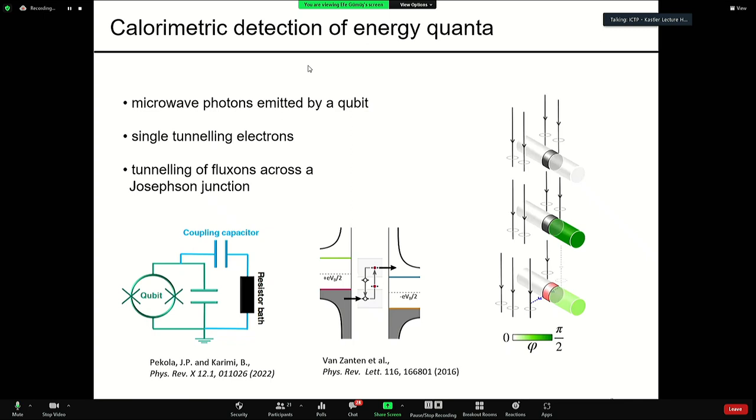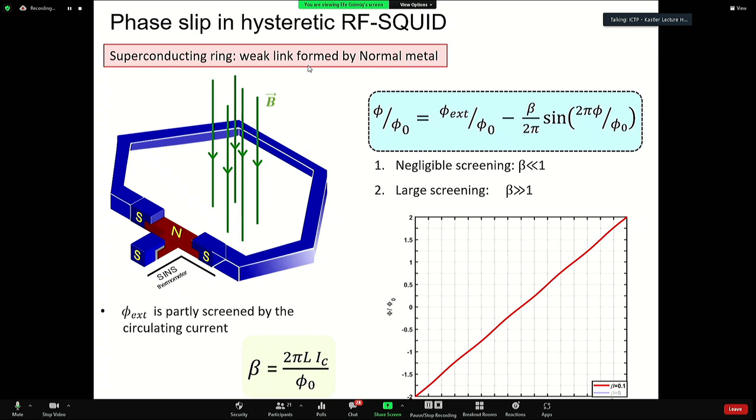In our case, it's going to be the thermal signature of the tunneling of a Josephson vortex in a hysteretic RF squid. We have a superconducting loop where the weakling is made of normal metal.